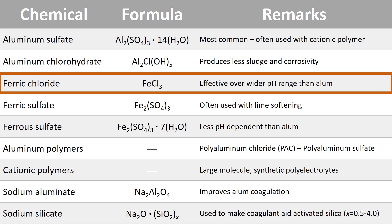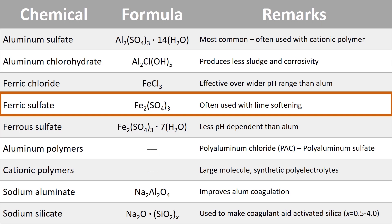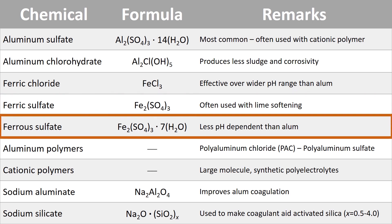Ferric sulfate is similar to aluminum sulfate in that it requires alkalinity — at least above 40 milligrams per liter — in order to be effective. Ferric sulfate is often used as part of the lime softening process, so something to remember for your test is that ferric sulfate is often used with lime softening. Ferrous sulfate is less pH dependent than alum, similar to ferric chloride.